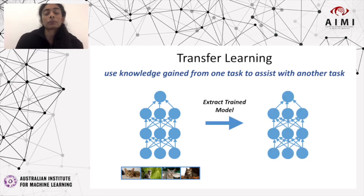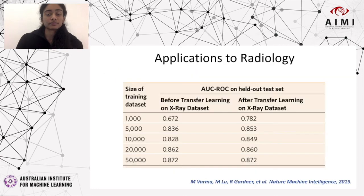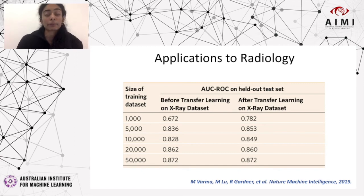Then the model will be fine-tuned on our elephant dataset, which will allow the model to improve its prediction accuracy without necessarily increasing the size of the dataset. These techniques are particularly useful in radiology. In a recent study conducted by our group, we showed that transfer learning can be utilized to improve model performance on the bone abnormality detection task, especially when dataset sizes are small.